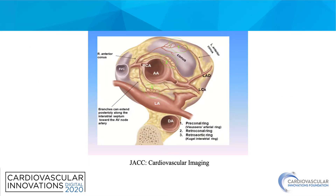In our case, this is a perfect image that we got from cardiac cardiovascular imaging. Here you can see the ascending aorta, the descending aorta, as well as the conus. The number one mark is the pre-conal ring and number two mark is the retroconal ring. In literature, you have seen the presence of either one of them, but in our case we see the concomitant presence of both of them, which makes the case pretty unique.